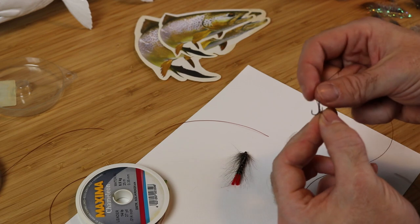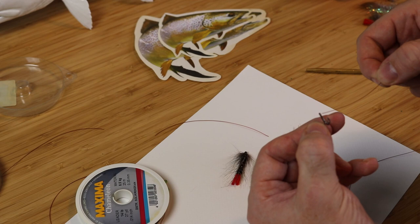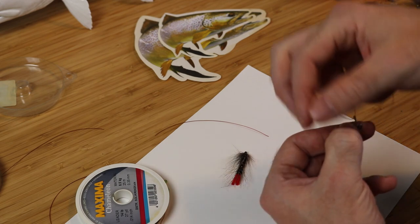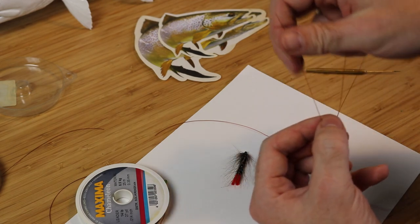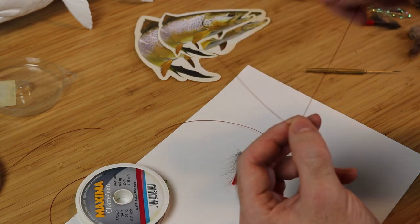Okay, so we have the treble aligned the way we want, you feed the tippet through the eye of the treble hook, make sure you have a good amount of tippet going through.